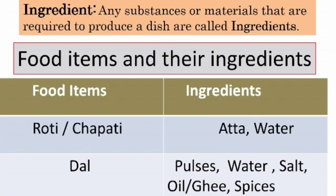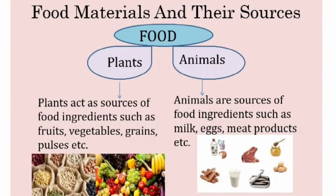Dal is made up of pulses, water, salt, and other spices. As we have already discussed, we require food to get energy and we eat when we feel hungry. We get food from two primary sources: plants and animals. All of the food we eat comes from either of these two. The processed food we eat in our daily lives is a combination of various ingredients sourced from either plants or animals.